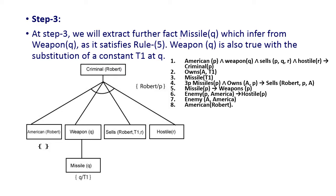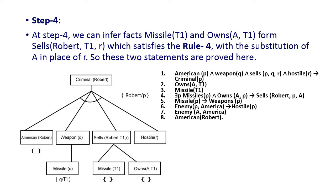In step 3, we extract the fact Missile(q) inferred from Weapon(q), which is available in rule 5: Missile(p) ⟹ Weapon(p). From Weapon(q) we infer Missile(q), substituting t1 in place of q. Weapon(q) is also proved with the substitution of constant t1 for q. In step 4, we infer Missile(t1) and Owns(A, t1) from Sells(Robert, t1, r), which satisfies rule 4, substituting a in place of r.